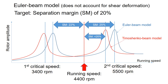However, once you use the Timoshenko beam model, it is highly likely that your natural frequencies are smaller than those from the Euler model, as you can see in the figure. In this case, your targeted separation margin of 20% from your second critical speed to your running speed might not be met.